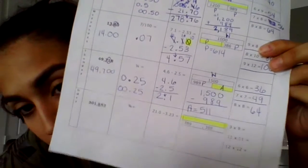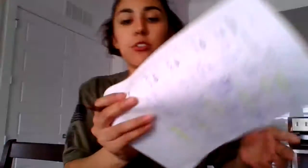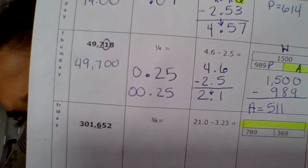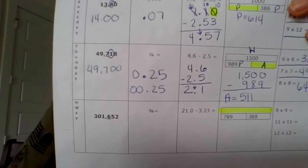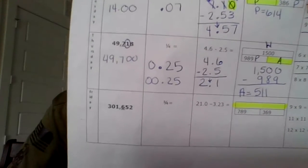Happy Friday everyone! Last section for the 'Give Me Five' page number three. The first column says round to the underlined place value. The place value that is underlined is the hundreds place — that six in the hundreds place. We have three hundred one thousand six hundred fifty-two, and the place value underlined is the hundreds place.